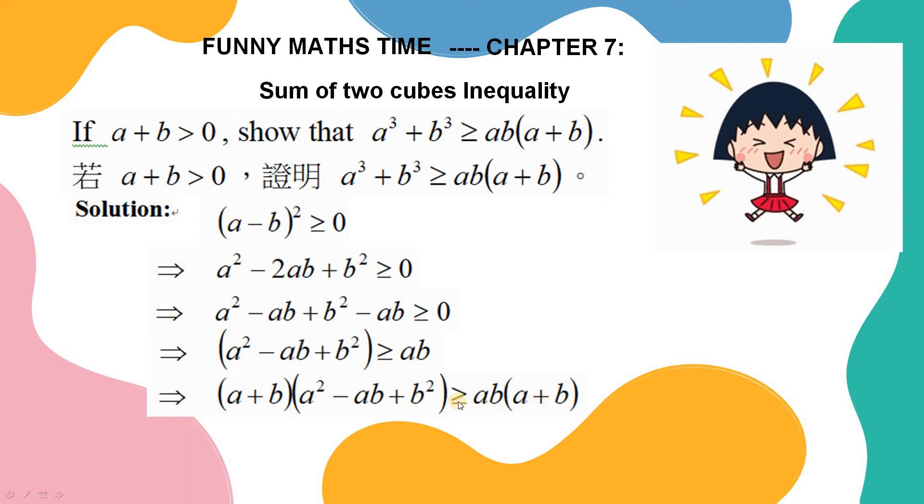Why? This inequality still holds. Because a plus b is greater than zero. A positive number multiplied to the inequality means that the inequality still holds in the same direction.